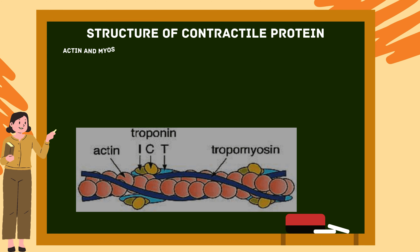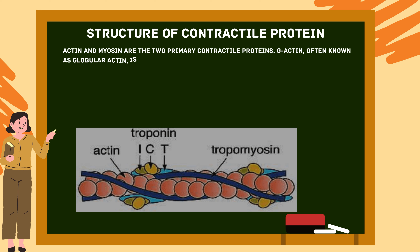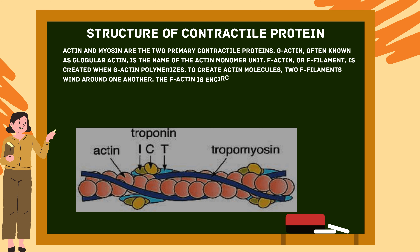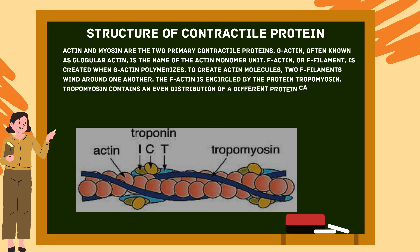Actin and myosin are the two primary contractile proteins. G-actin, often known as globular actin, is the monomeric unit of actin. F-actin or F-filament is created when G-actin polymerizes. Two F-filaments wind around one another to create actin molecules, and the F-actin is encircled by the protein tropomyosin.